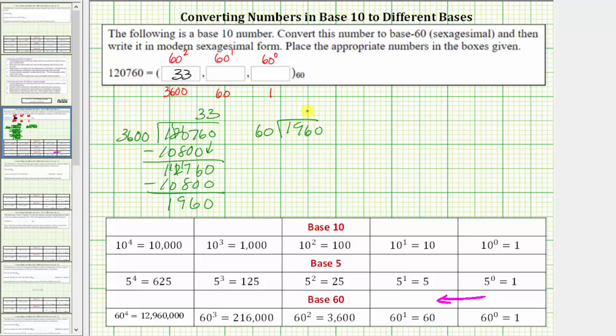There are three 60s in 196. Three times 60 is 180, subtract. The difference is 16, bring down the last digit of zero. And there are two 60s in 160. Two times 60 is 120, subtract. The difference is 40, 40 is the remainder. 32 is the whole number in the 60s place value.